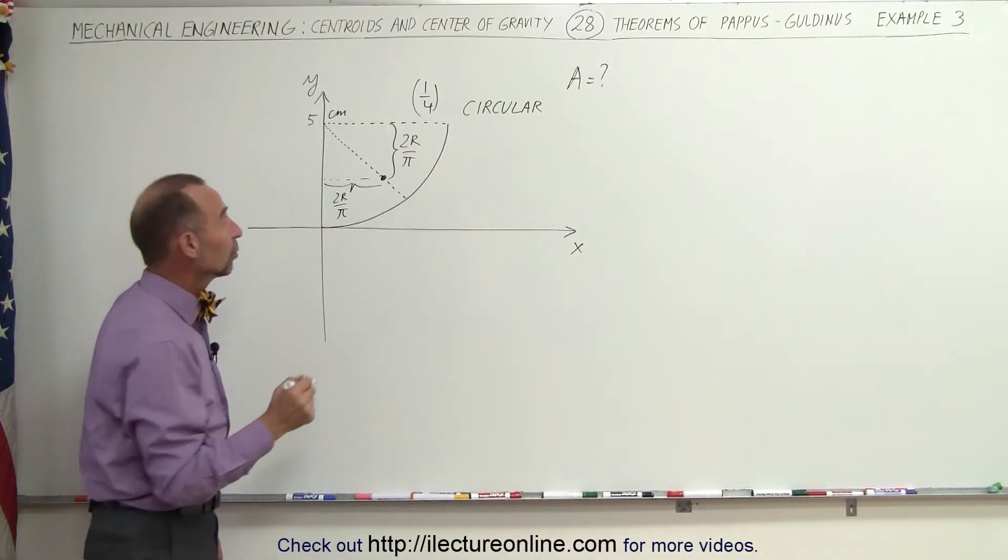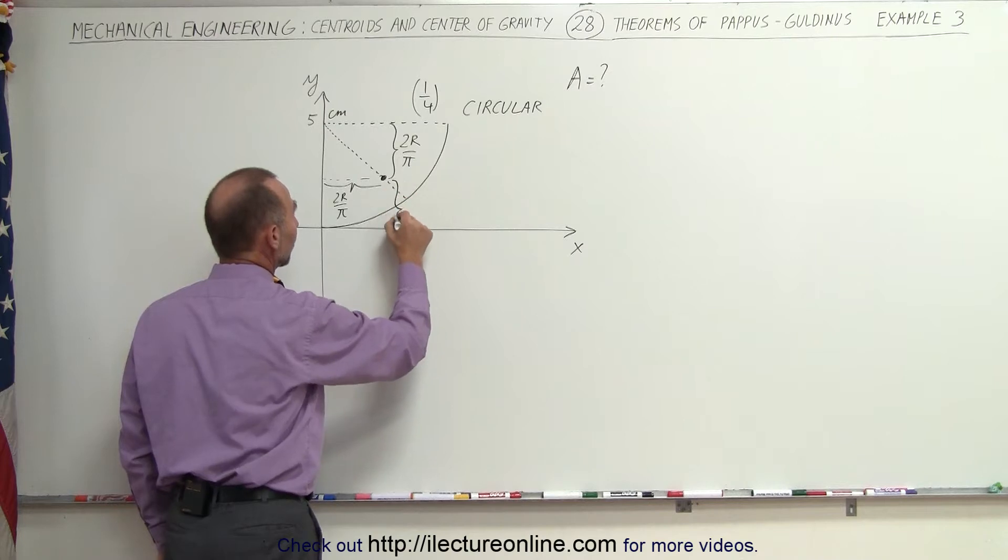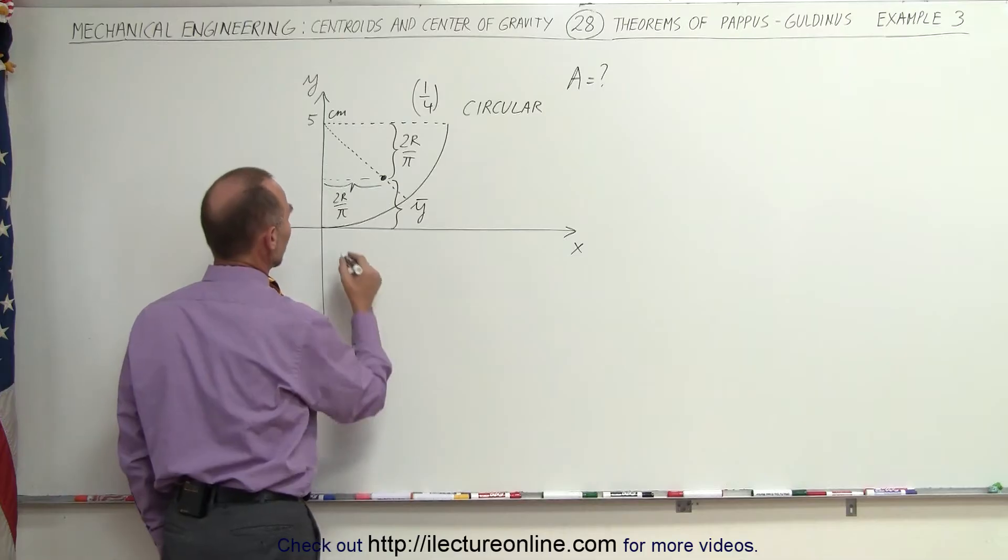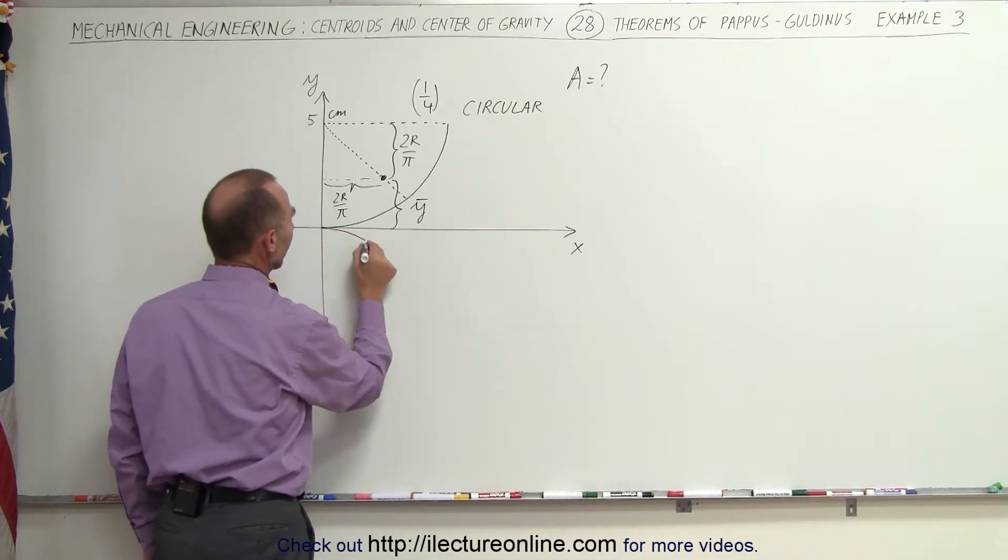But what we're really interested in is this distance. This is the y-coordinate of the centroid as you're rotating it about the x-axis. When you do that you get something that looks like this.